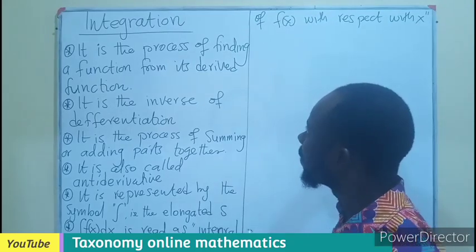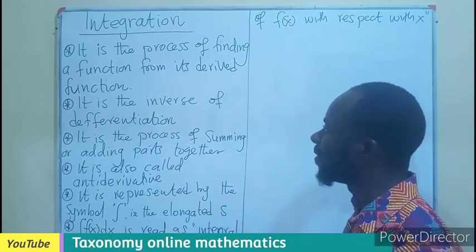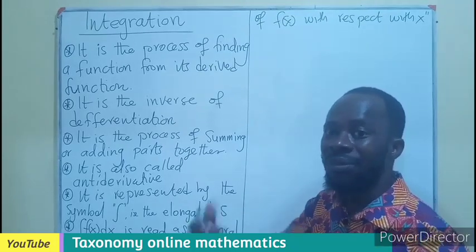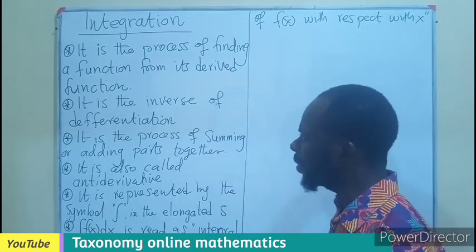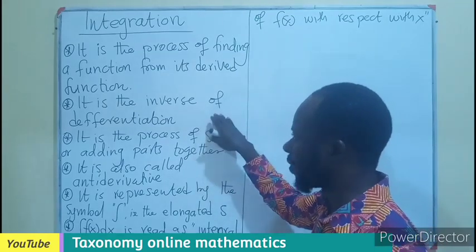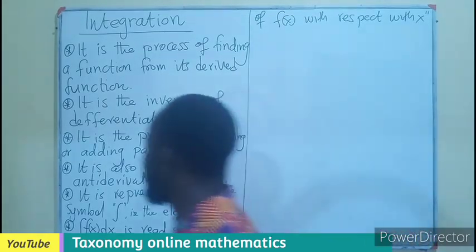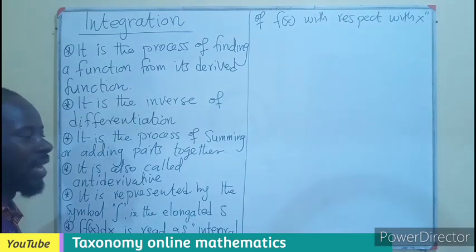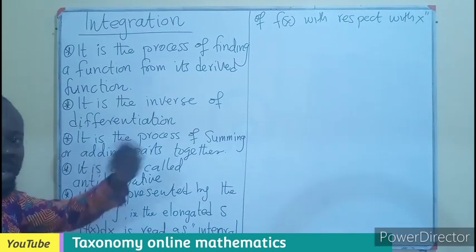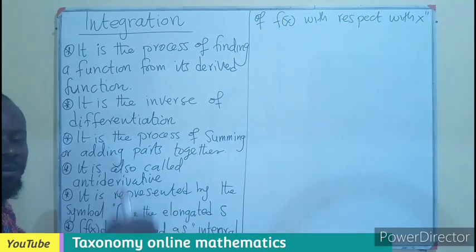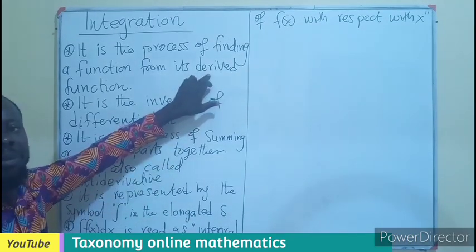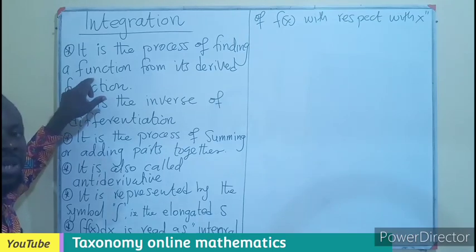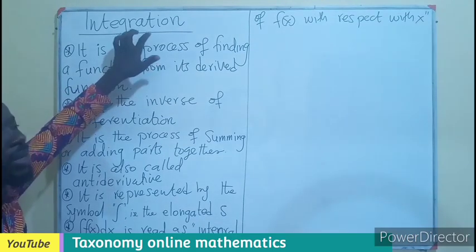Integration is the process of finding a function from its derived function. A derived function in this case could be the differentiation of a function. We can also say that it is the reverse or inverse of differentiation. It means if I have a function and differentiate it, that differentiated function, which is the derived function, can be converted back into the function we are looking for. So converting the derived function back into the original function becomes integration.